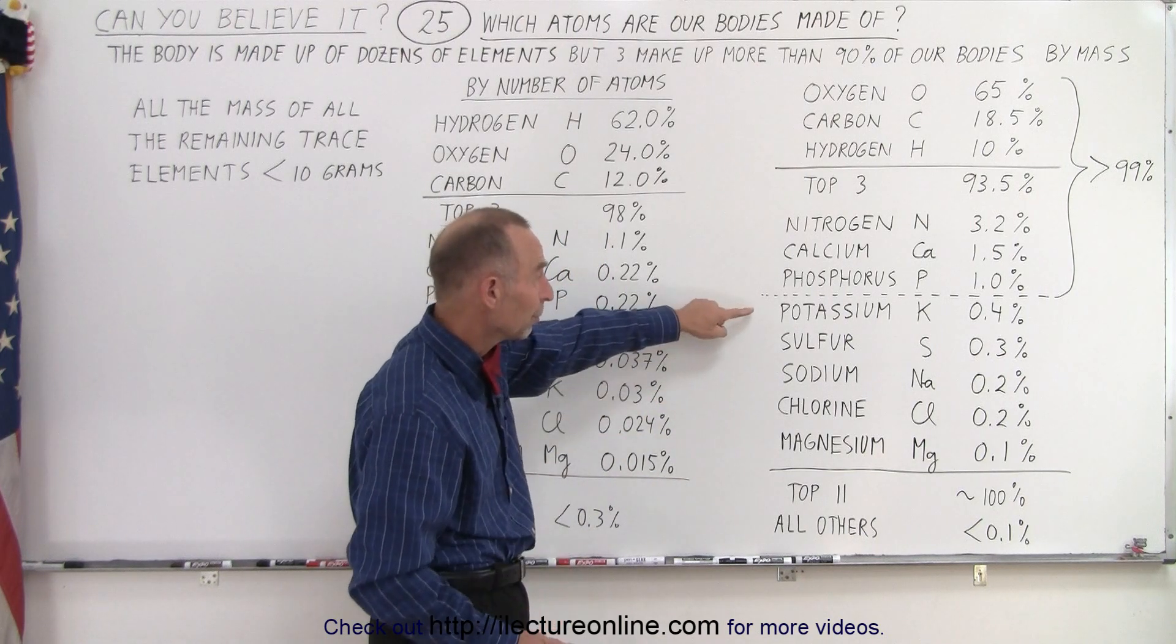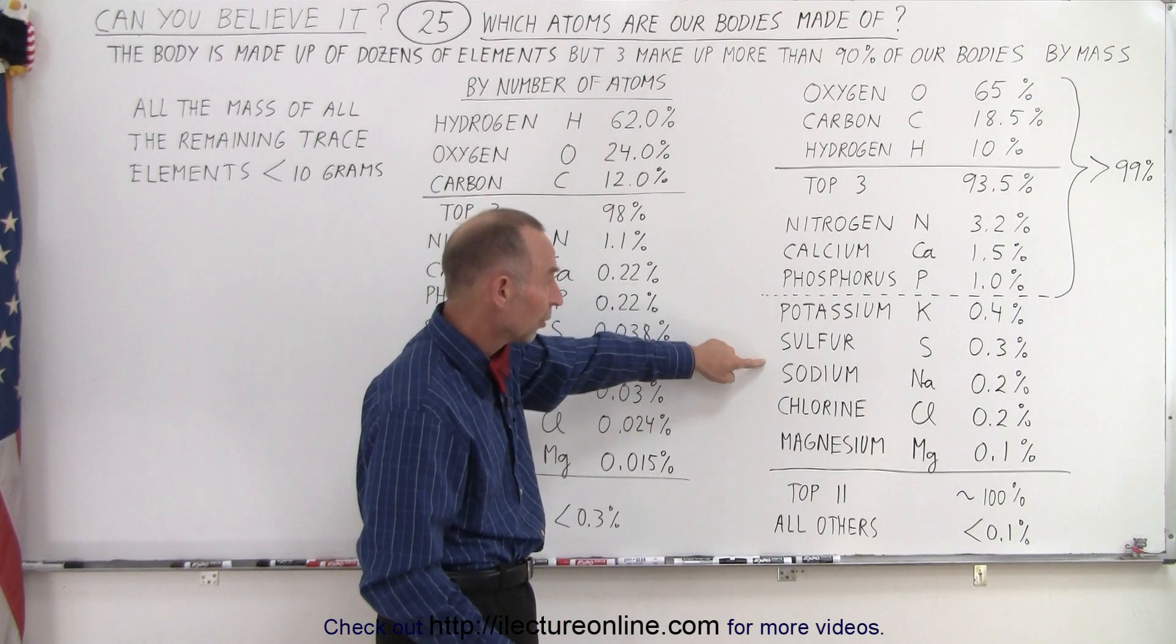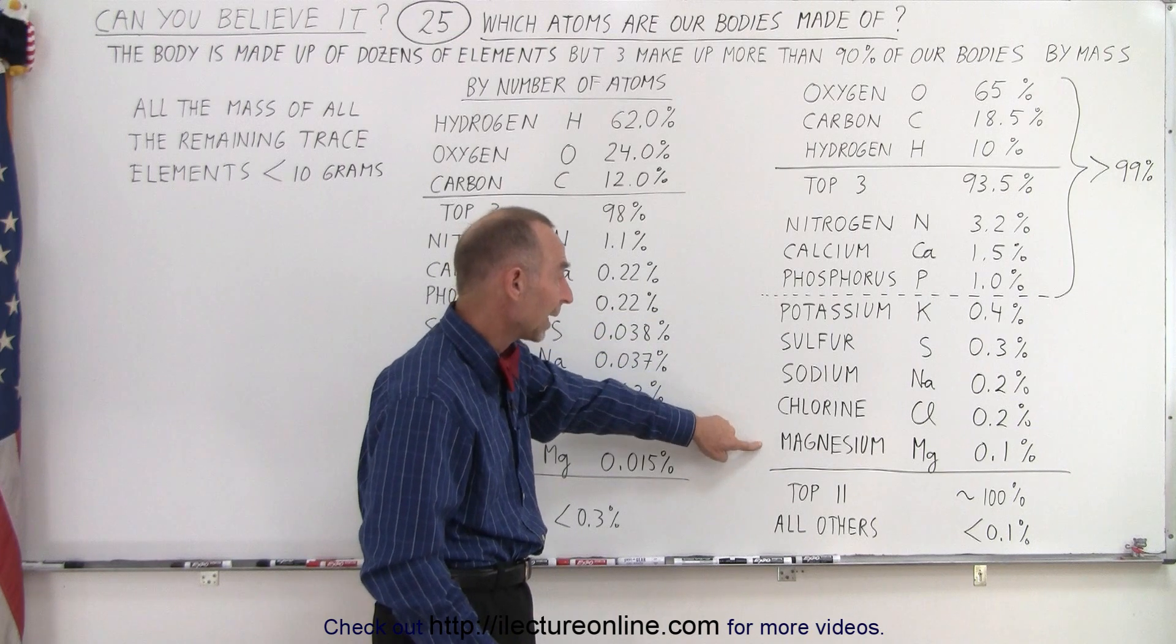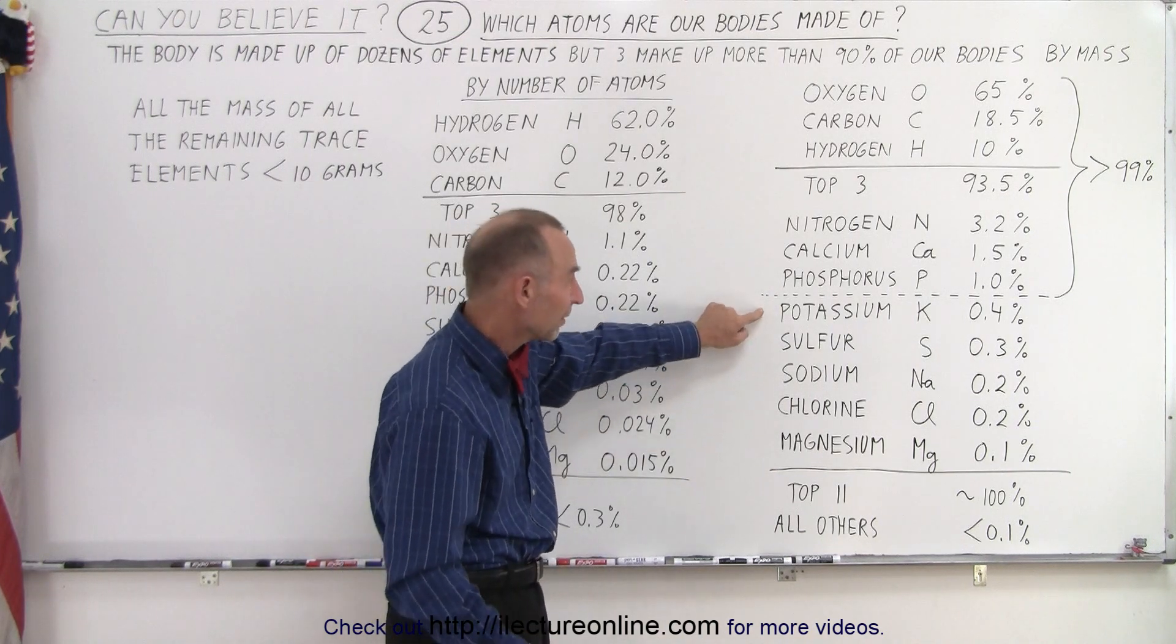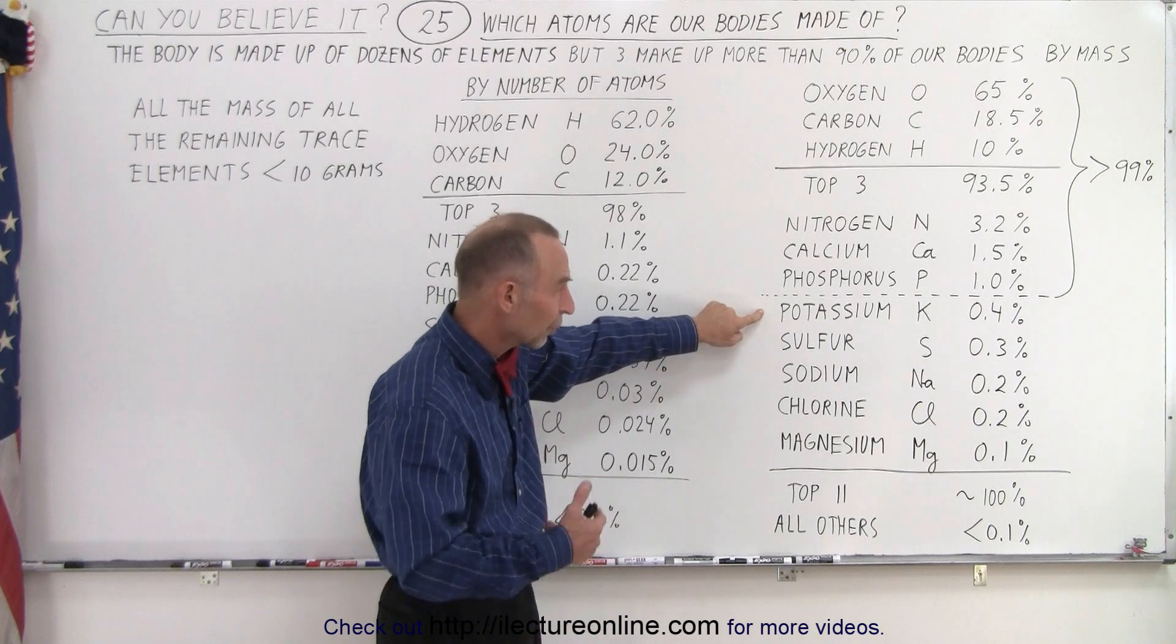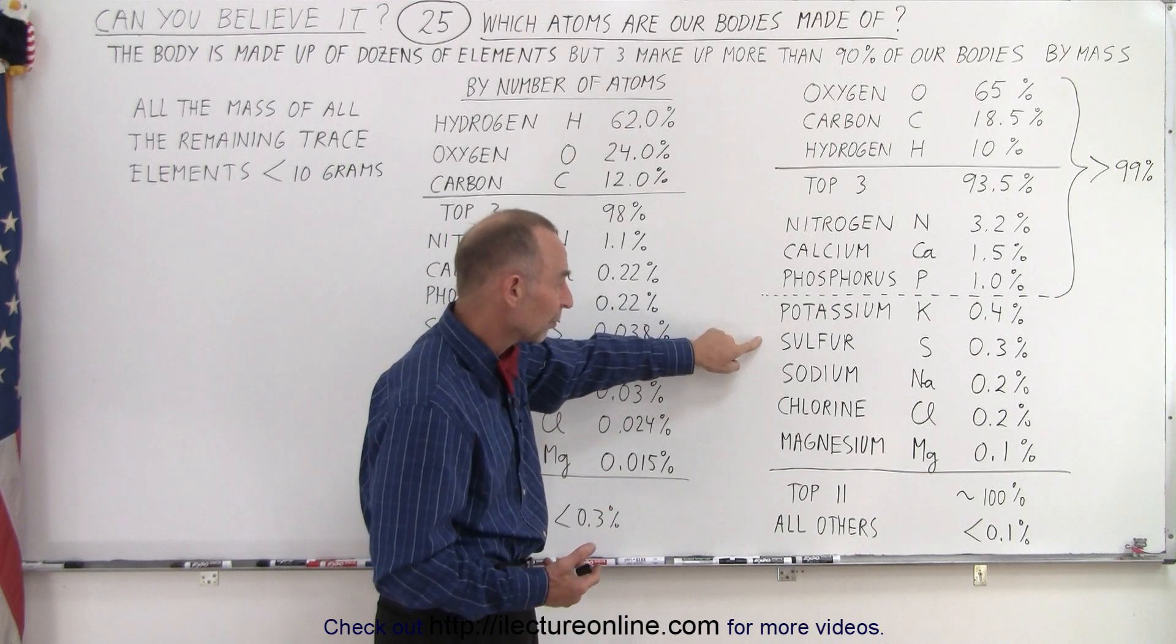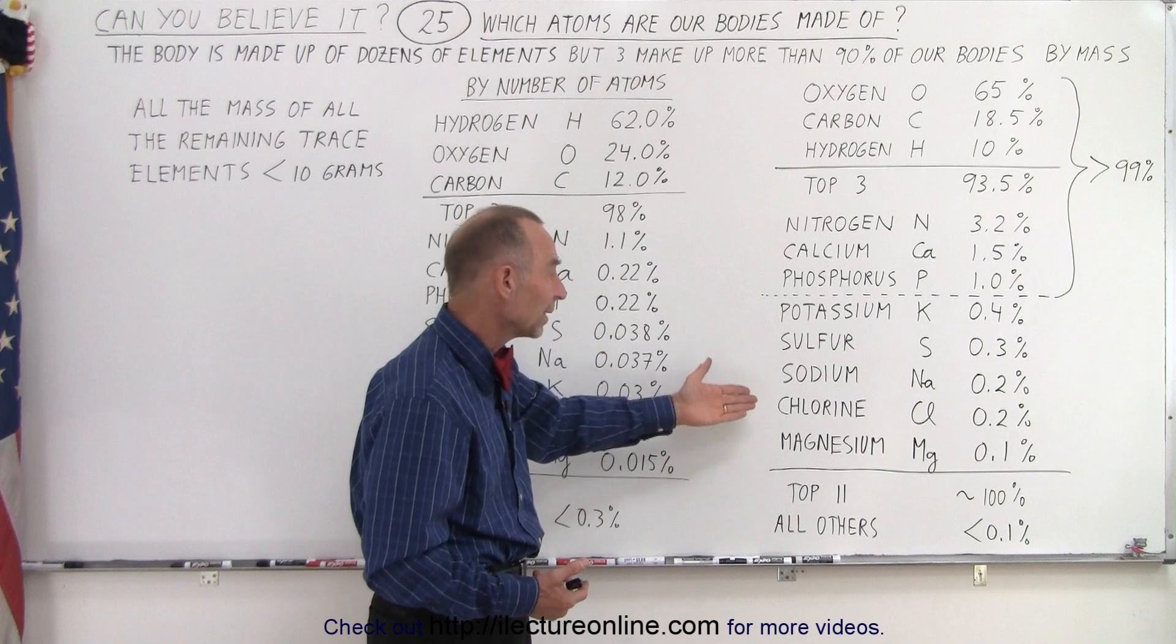And then we have five more: potassium, sulfur, sodium, chlorine, and magnesium. Now of course, when you combine sodium and chlorine, that gives you salt. Potassium also is a type of a salt, the compounds that they come in, some sulfur, magnesium. And notice when you add those together, the top 11 are virtually our entire bodies.